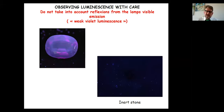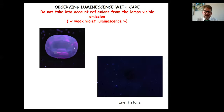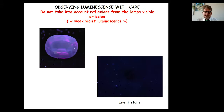When observing luminescence color, do not note the color of the visible light reflection. Since the UV lamp emits visible violet-blue light, you may see that reflection on the stone rather than true luminescence — this is what gives the appearance of 'weak violet luminescence' reported by many gemologists. Use an inert stone as a master to understand what truly inert looks like. An inert stone surrounded by fluorescing dust is useful for evaluating very weak luminescence.